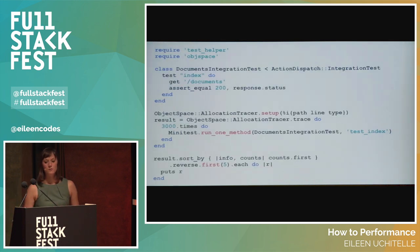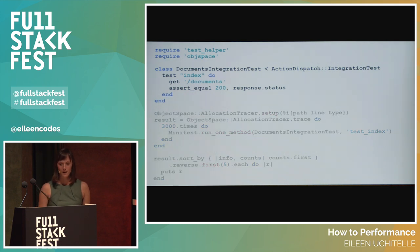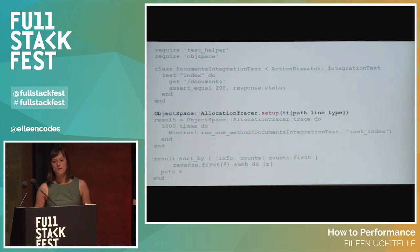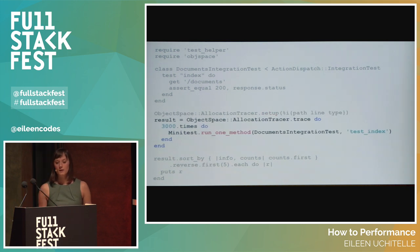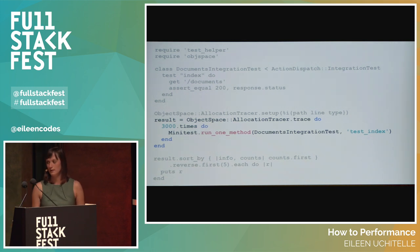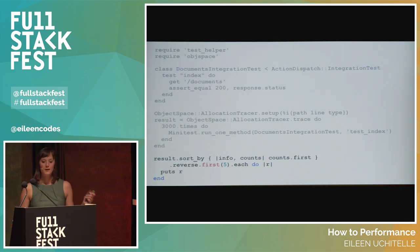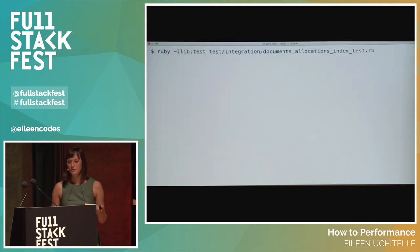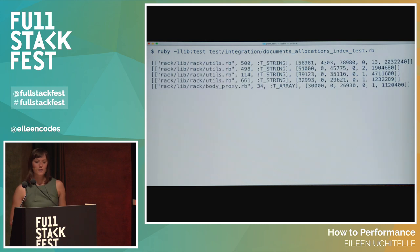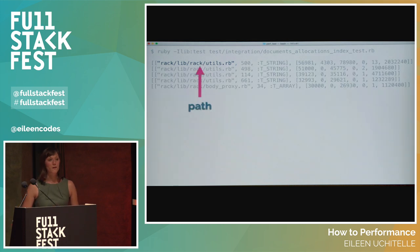Here's an example of the Allocation Tracer script we used to track allocations in the integration tests. To use Allocation Tracer, we need to include ObjectSpace. Then we define the integration test as we've done in the past scripts. We then set up Allocation Tracer and call pathline and type — this allows us to define the information we want from Allocation Tracer's output. Then we assign the trace to result. We run the test 3,000 times to get an accurate sample of allocations. Finally, we resort the result by the number of allocations, reverse to put the highest counts at the top, and we return only the first five because we just need the top five highest offenders.